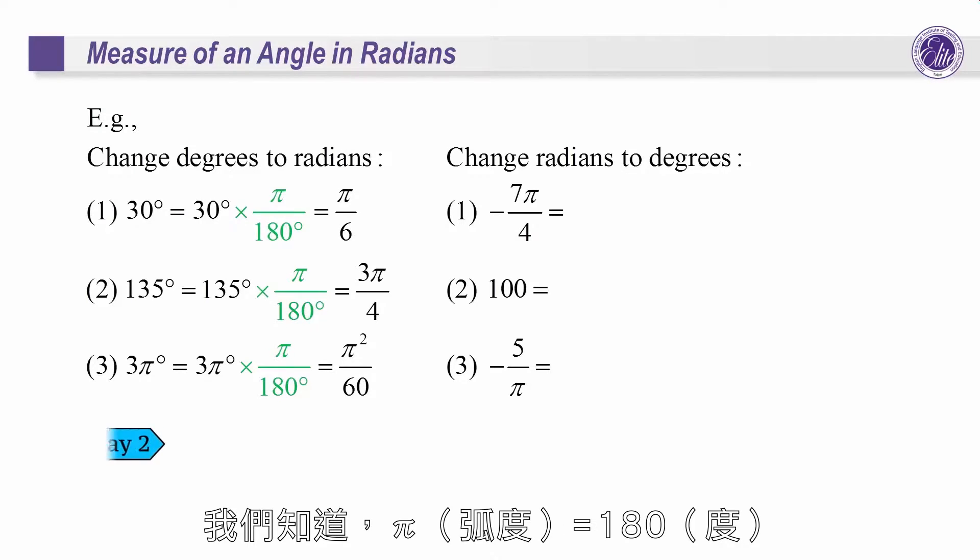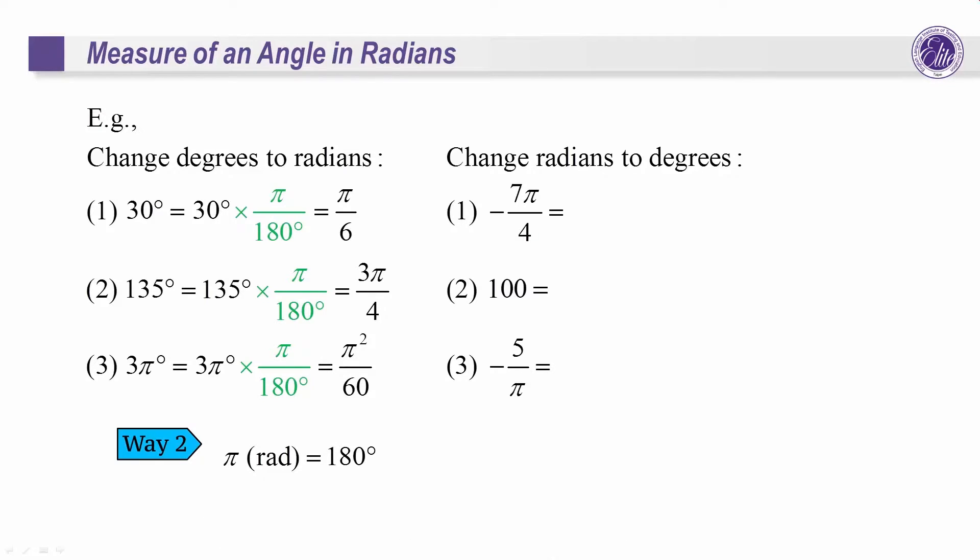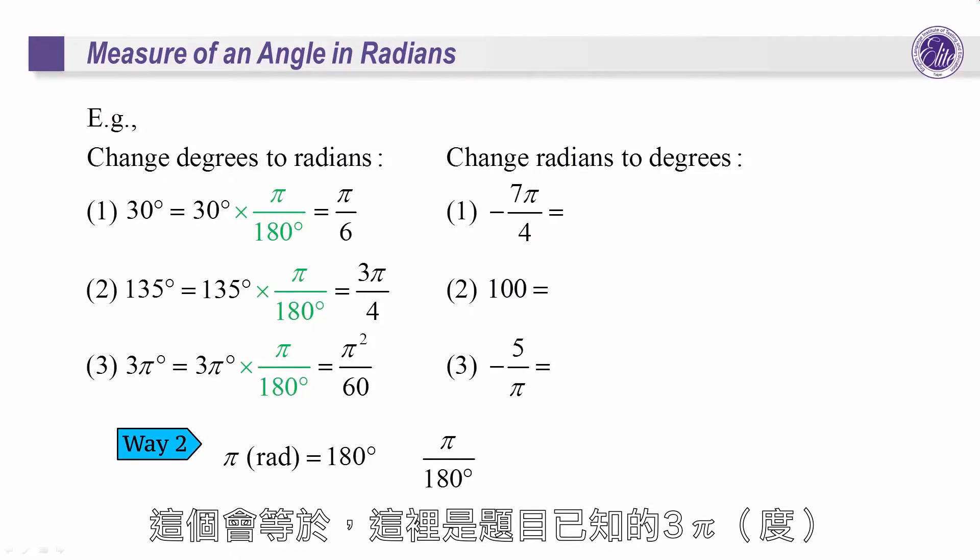As we know, pi radians is 180 degrees. So we have pi to 180 degrees, and this shall equal to 3 pi degrees, which is what we have in the example.